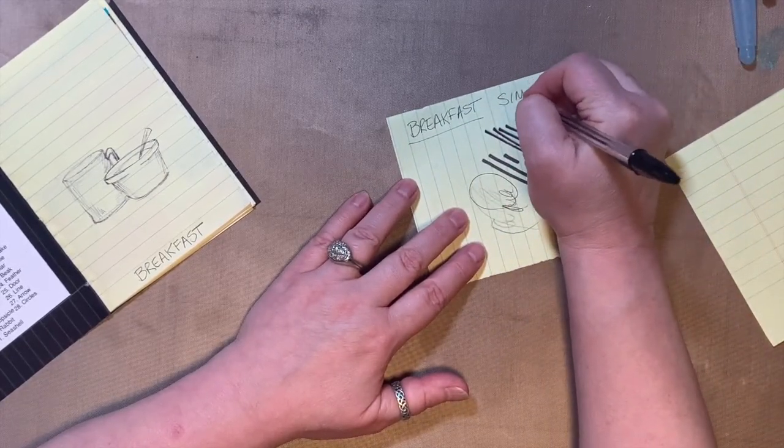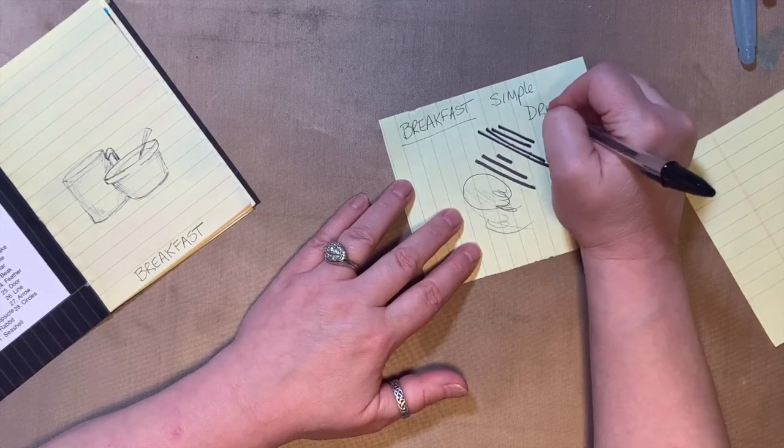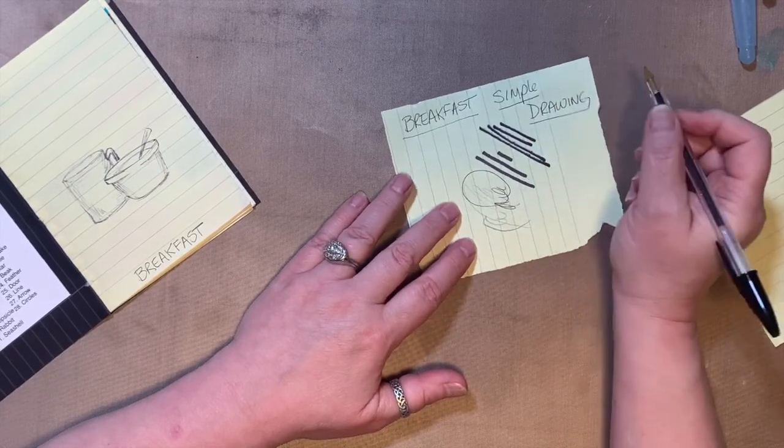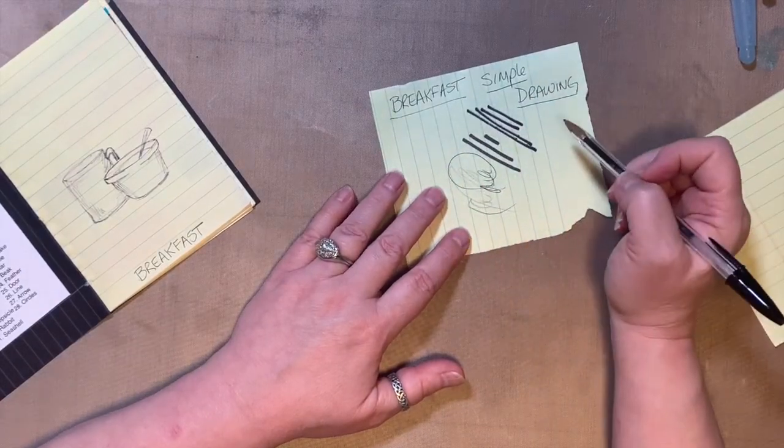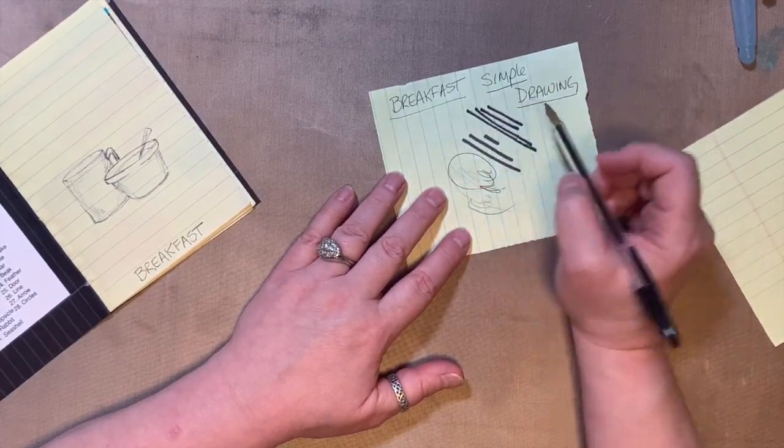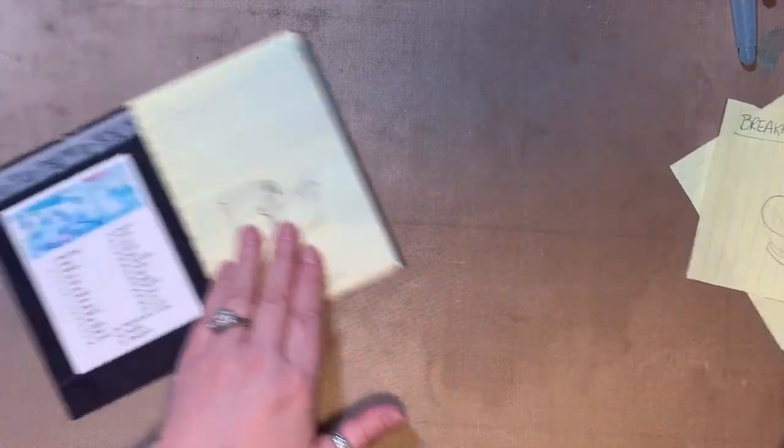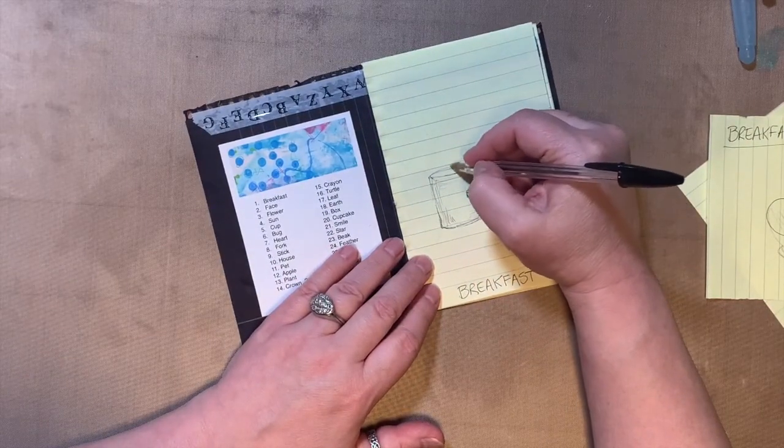Then type 'simple' and then 'drawing.' Type that into Google images or Pinterest and see what pops up, then take inspiration from what pops up for an idea of what to draw. I'm going to draw some steam coming off my coffee.